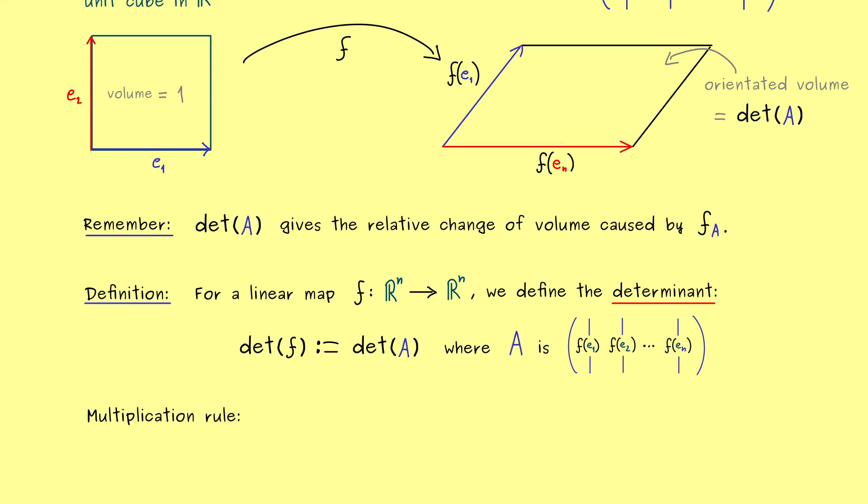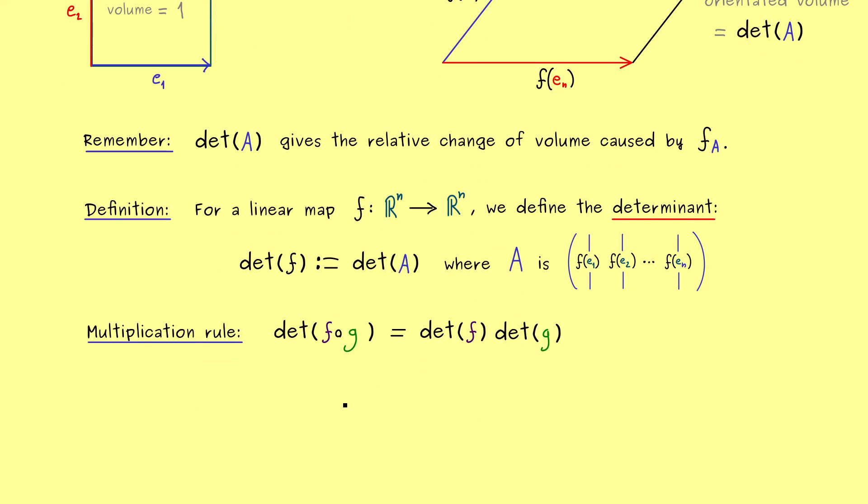So for example, for the multiplication rule, we now have to consider compositions of linear maps. So more precisely, we would have the composition f after g inside the determinant function. And then we know we can simply write it as a product of two determinants. In fact, this follows immediately from the multiplication rule for the determinants of matrices. But now on this abstract level, this is also something we can use.